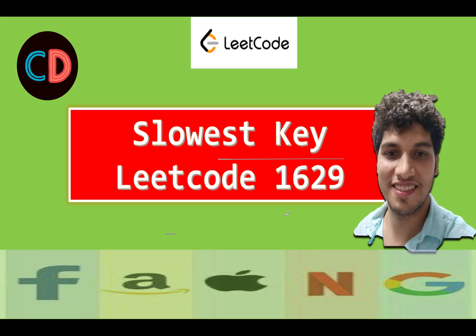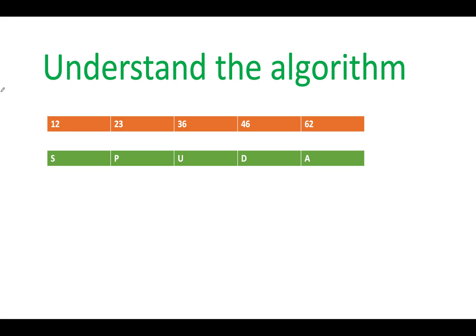Slowest key LeetCode 1629, and let's try to understand the input that is specified in the question. We have the s character being pressed till the 12th second, that means the duration for which s was pressed is 12. Let's move on to the next character. Next character is p, so p was pressed till the 23rd second. So what is the duration for which p was pressed in the system? It is 23 minus 12, which is nothing but 11, so I'll update this to 11.